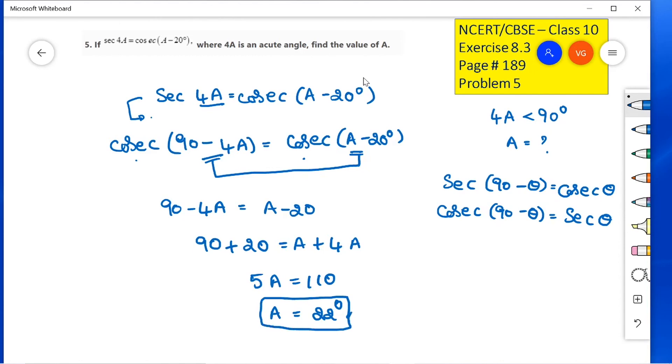So, the answer is A equals 22 degrees. Let us check whether the given condition is satisfied. Given that 4A is less than 90 degrees, here as A equals 22 degrees, 4A equals 88 degrees. So, 4A is less than 90 degrees. The given condition is satisfied. It is an acute angle.